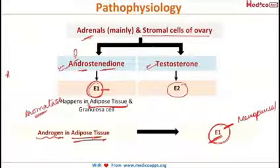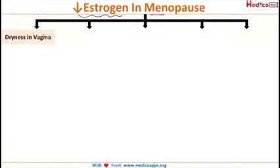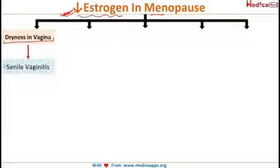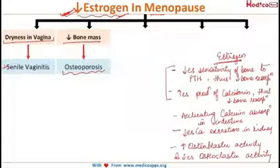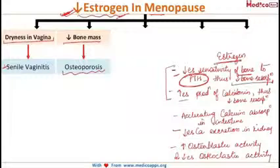Decreased estrogen is the major mechanism behind all menopausal symptoms. There will be vaginal dryness because cervical mucus secretion depends on estrogen — this is called senile vaginitis. Bone mass also decreases, leading to osteoporosis. Estrogen decreases bone sensitivity to parathyroid hormone, which causes bone resorption. Estrogen also increases calcitonin production, which inhibits bone resorption.